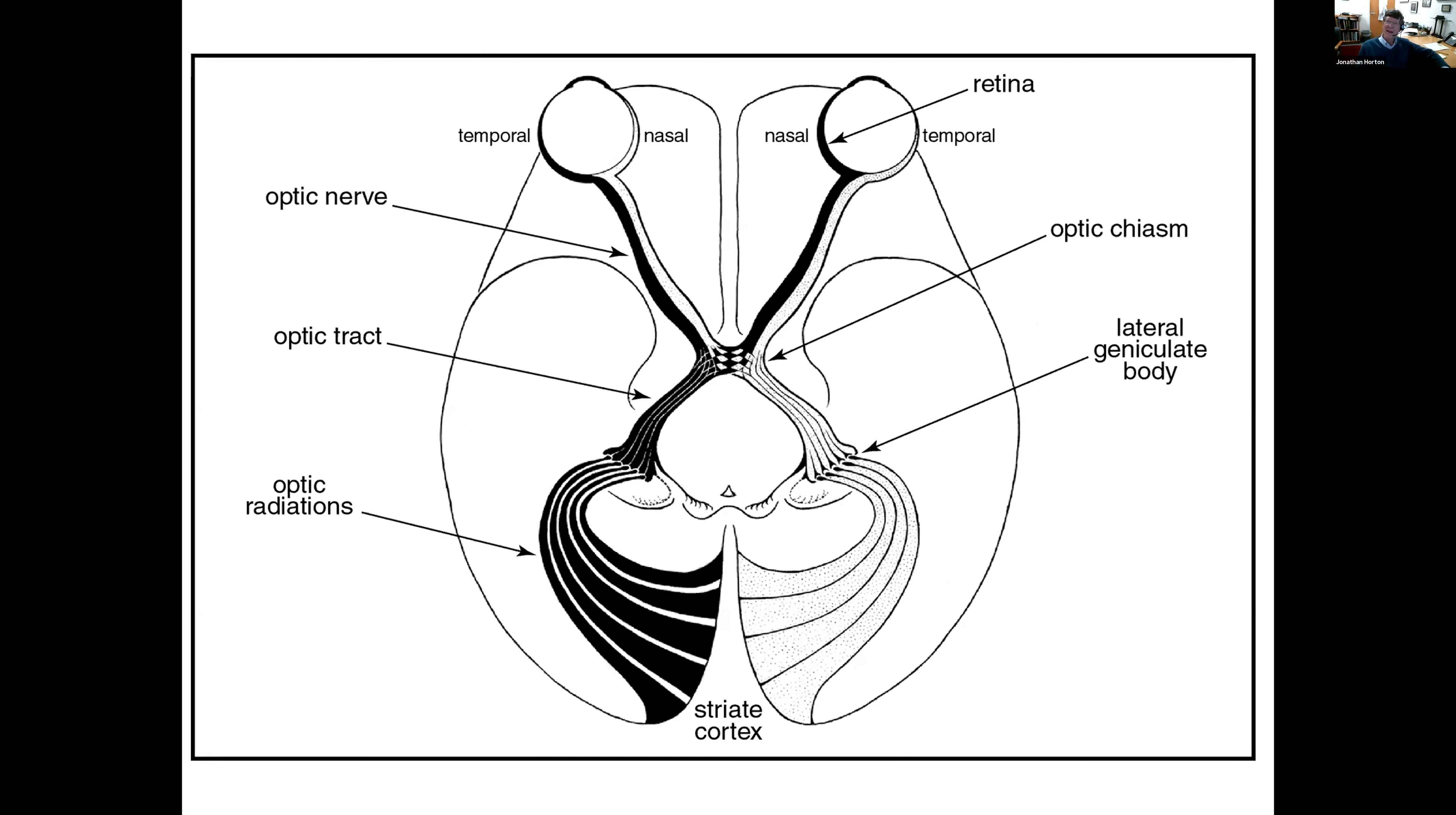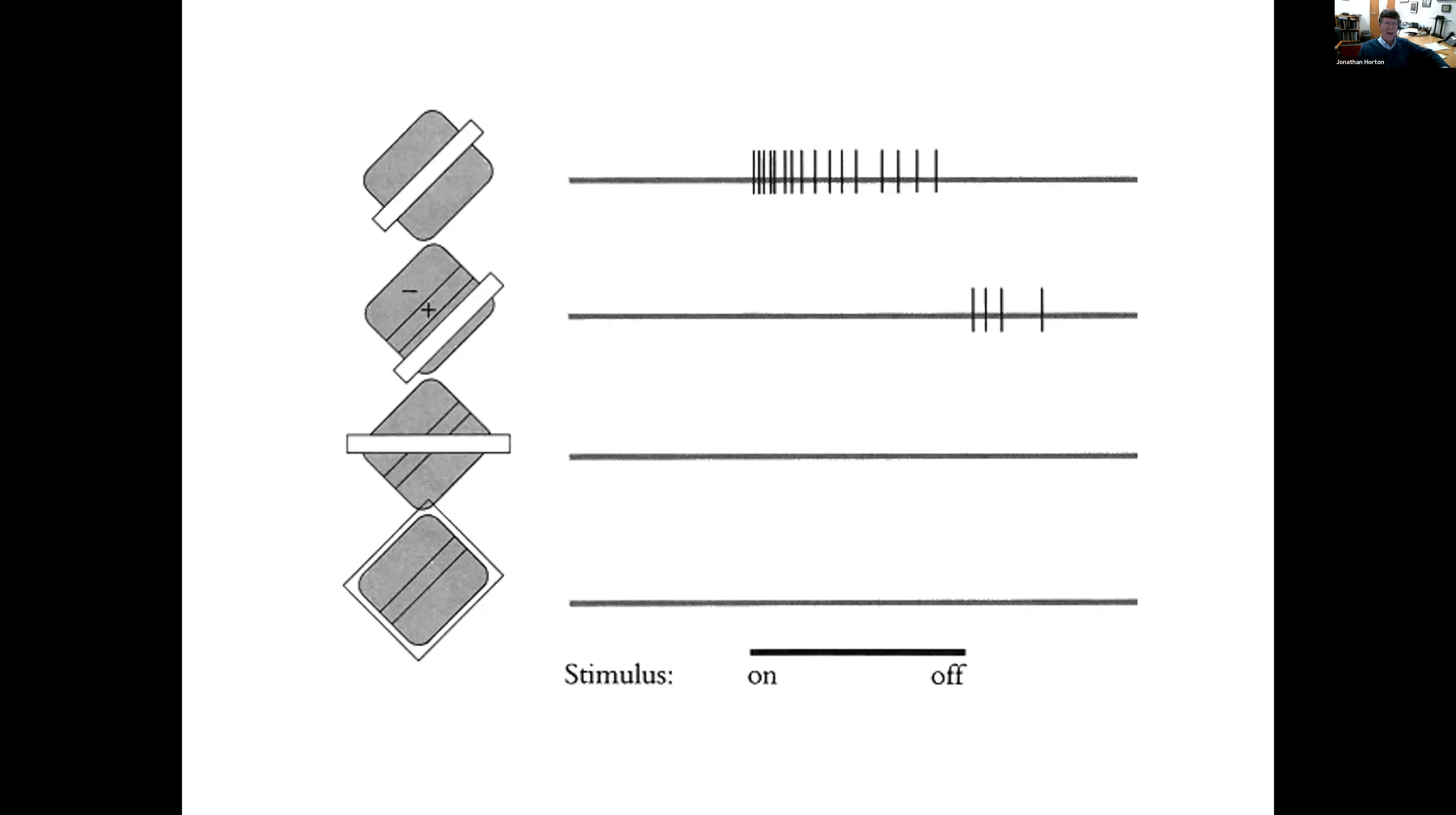The cells in the lateral geniculate body then project to the cortex, and in the cortex one finds a dramatic transformation in receptive field properties. The cells in the cortex have orientation tuning. For example, if the receptive field corresponds to this gray shaded zone, a light that is oriented like this excites the cell to fire. When it turns on, there's a burst of action potentials. One can plot in simple cells zones where light excites or light suppresses. The important point is that when the light stimulus is presented at the wrong orientation, the cell is not excited to fire. So going from the geniculate to the cortex, there's a transformation from center surround to oriented receptive fields.